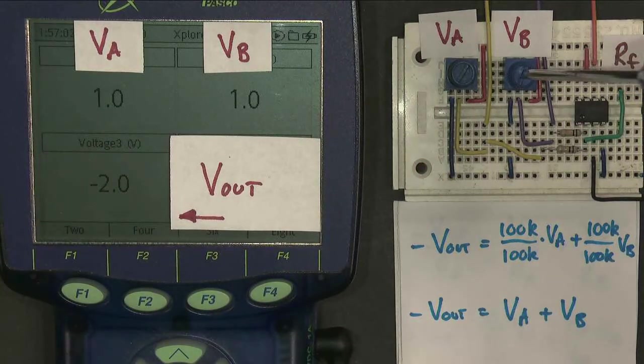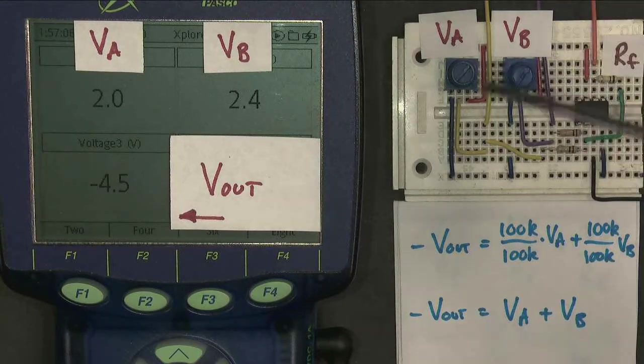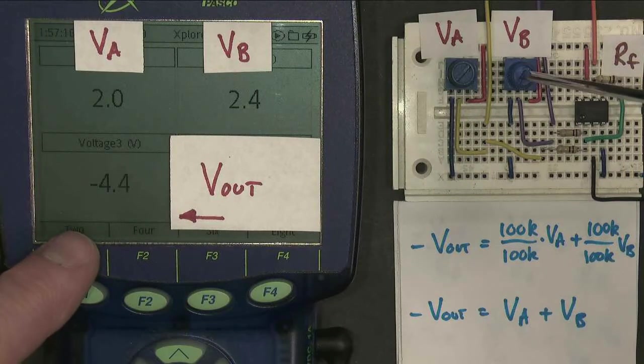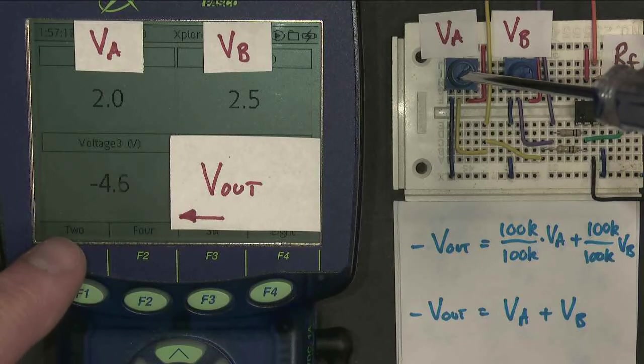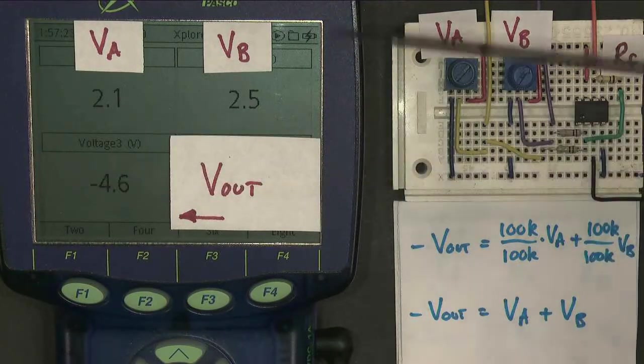one volt and one volt adds up to two volts, minus two. And if I make them just arbitrary values, so 2 and 2.4 gives me minus 4.4-ish almost. Let's just see if we can get it to work. It's almost there. Yeah, there we go. 2.1, 2.5 adds up to 4.6 with a minus sign.